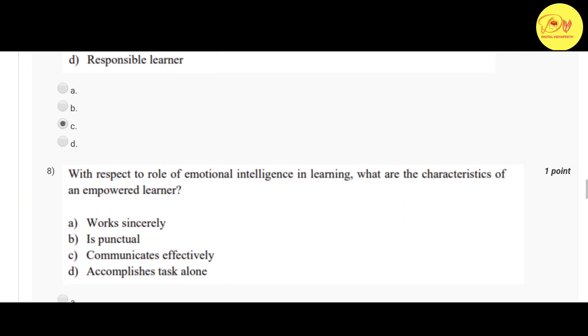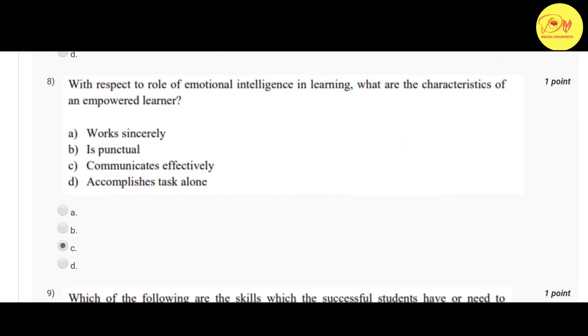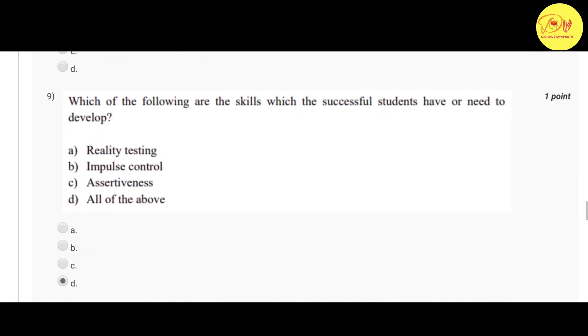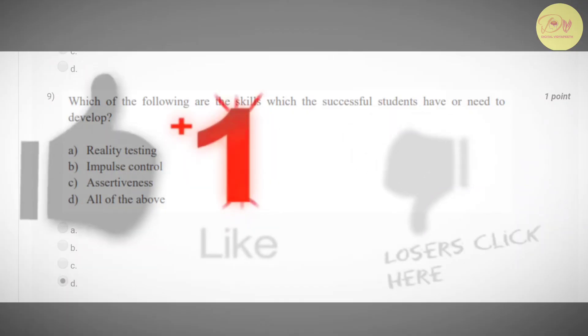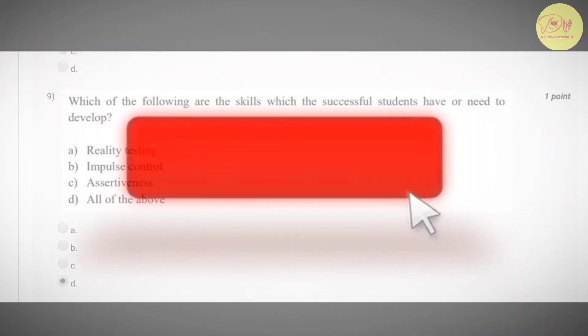Our eighth question is: with respect to role of emotional intelligence in learning, what are the characteristics of an empowered learner? Correct option is C, communicates effectively. Our ninth question is: which of the following are the skills which successful students have or need to develop? Correct option is D, all of the above - that is reality testing, impulse control, and assertiveness.